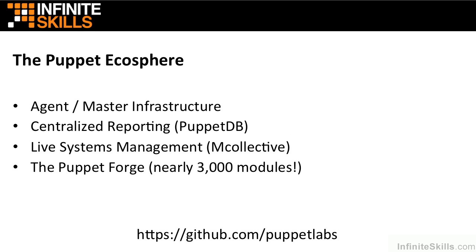The Puppet ecosystem is a very large and rich set of tools and ways of accomplishing things in your infrastructure. It is mainly based around the interactions of Puppet agents and Puppet masters. Agents are the key to doing things in a Puppet environment — a Puppet agent is responsible for maintaining, installing, and configuring software on individual servers and compute nodes. Puppet masters maintain the catalogs and definitions of your infrastructure in a centralized and scalable manner, serving those definitions to tens, hundreds, or thousands of individual agents running on server nodes.